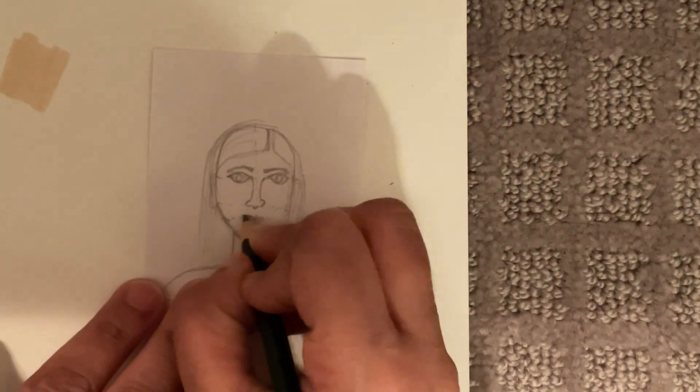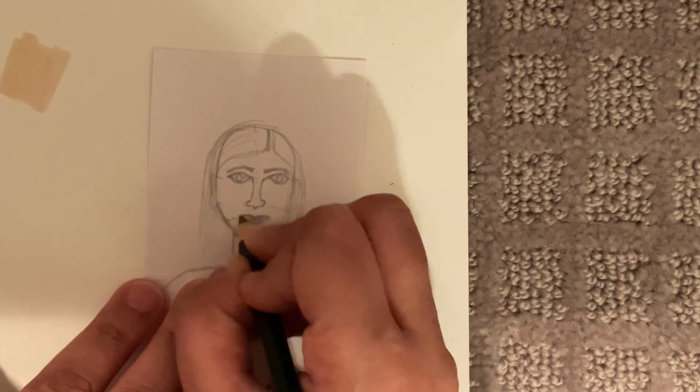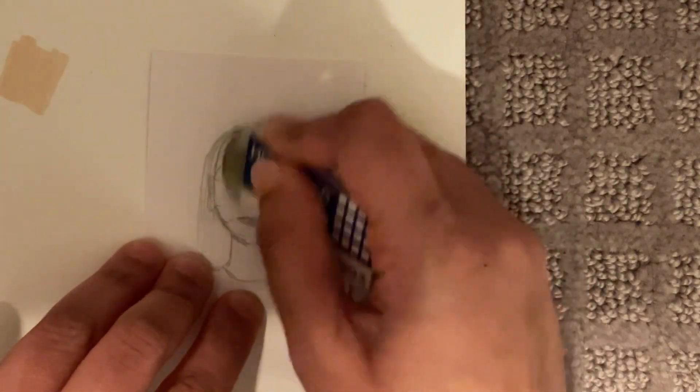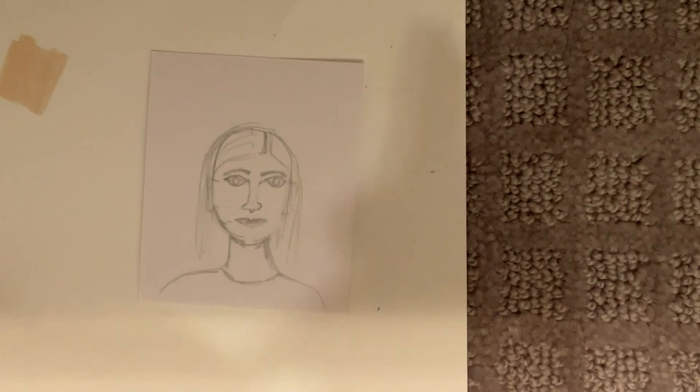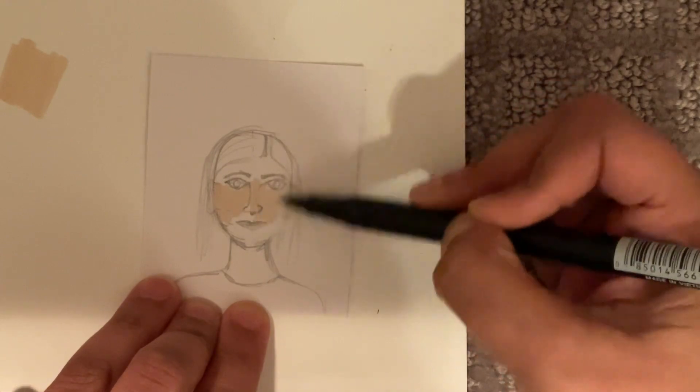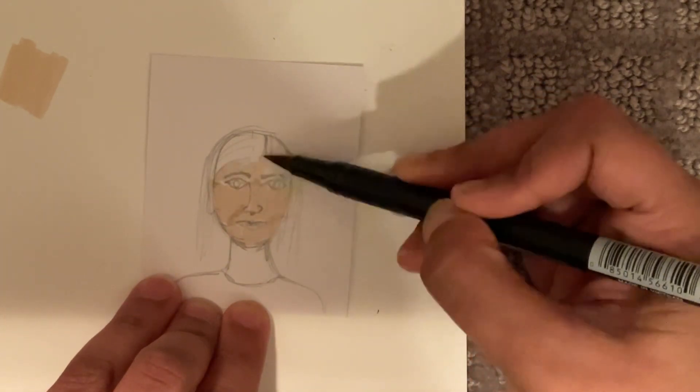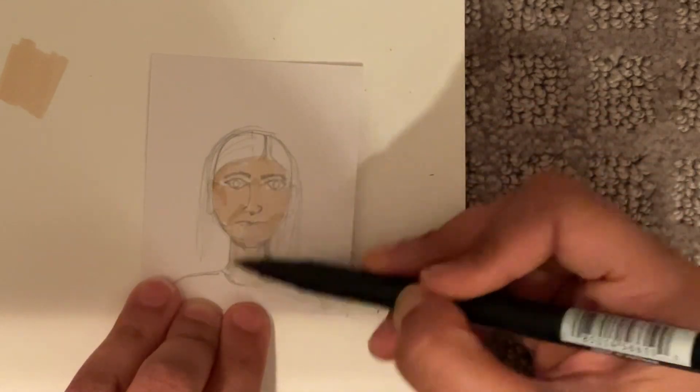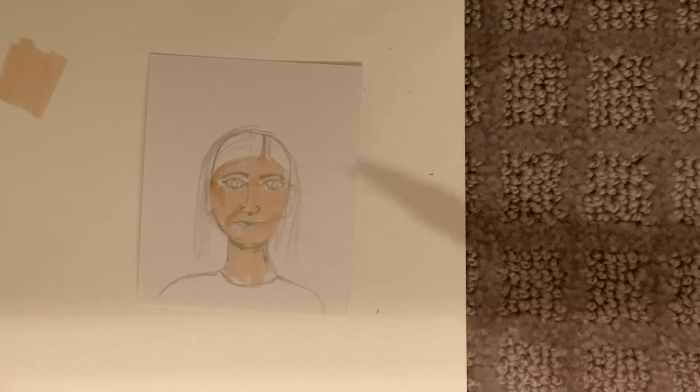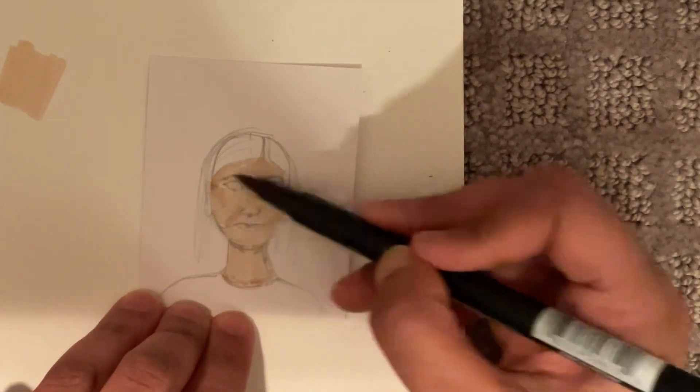One thing I recommend is try to get a pencil that has an eraser. These erasers are too big to handle erasing tiny little spaces, but I'm going to try my best. Okay, so first thing I'm going to color my skin. And really it's really hard to just kind of color around everything. So I would just try to avoid coloring over your eyes. Everything else will work out on its own.